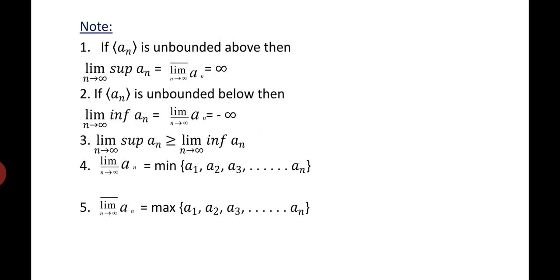Let's see a few conditions. If a_n is unbounded above, then lim_{n→∞} sup(a_n) equals infinity. If the sequence a_n is unbounded below, then lim_{n→∞} inf(a_n) equals minus infinity. Also, lim_{n→∞} sup(a_n) will always be greater than or equal to lim_{n→∞} inf(a_n).